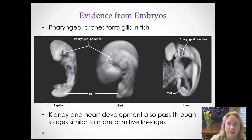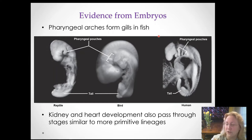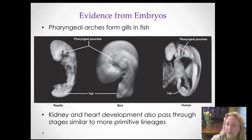In fish, these arches go on to form gills. We can see these slitted gill structures especially in more primitive fish like sharks — those slit gills are right on the surface of the adult. And here's a human embryo at that same stage, and we can see these gill arches in a human embryo.